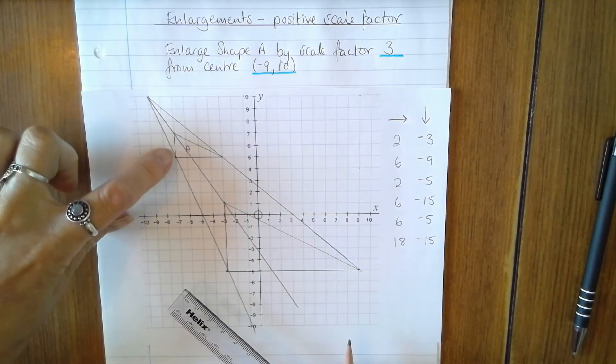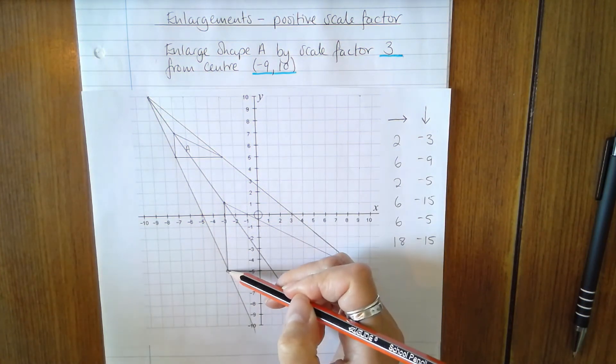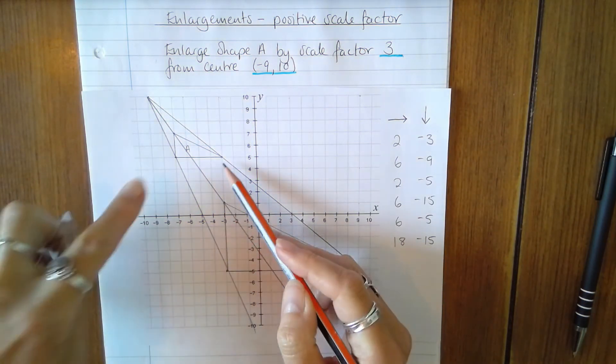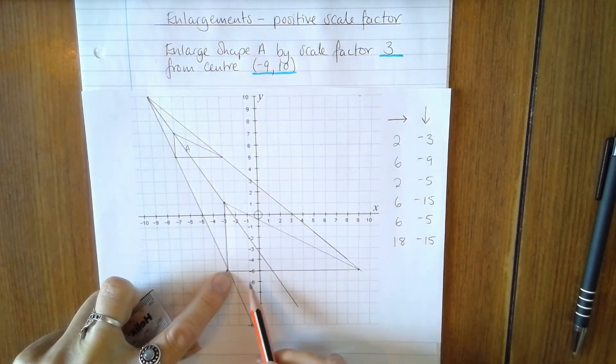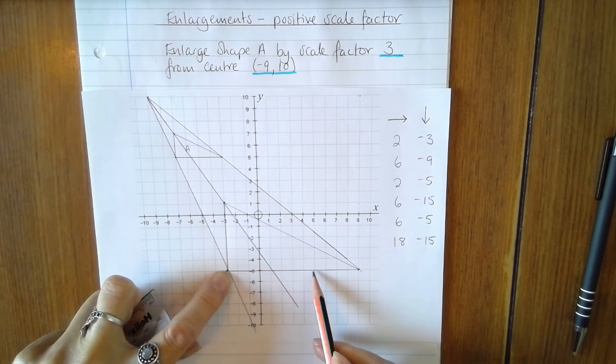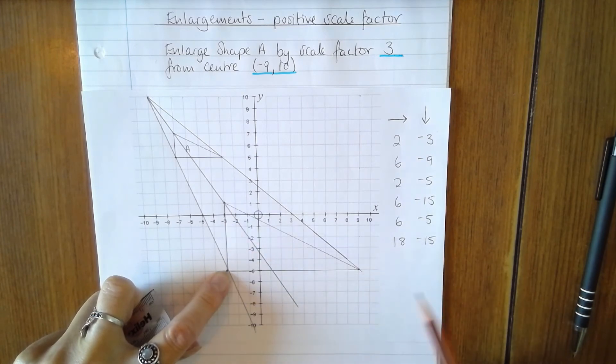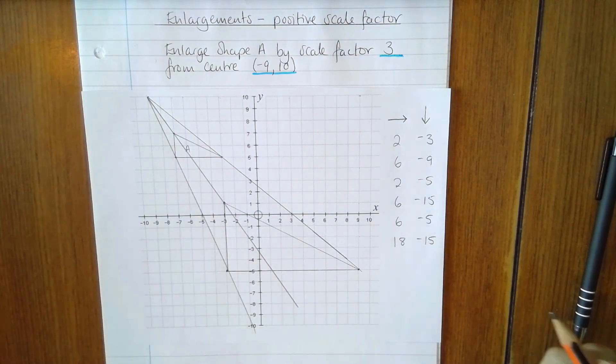The height of this triangle is two. An enlargement scale factor three means that the new height should be six, correct. The width is four, the new width should be three times that which is 12, and it is. And the vertices are on the guidelines, so I know that that's a correct enlargement.